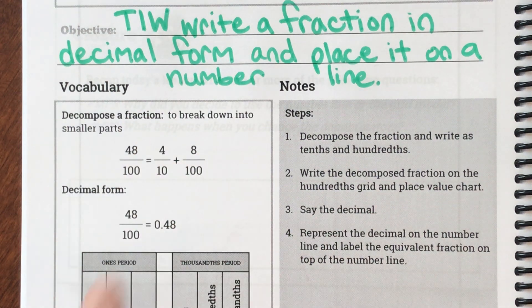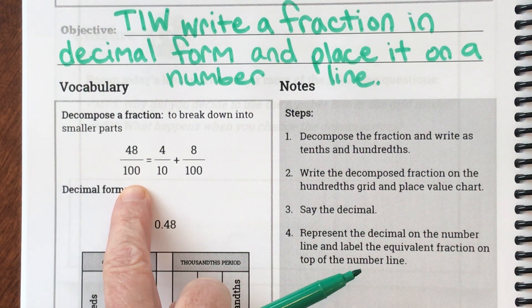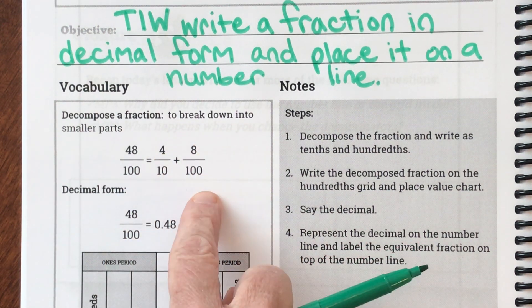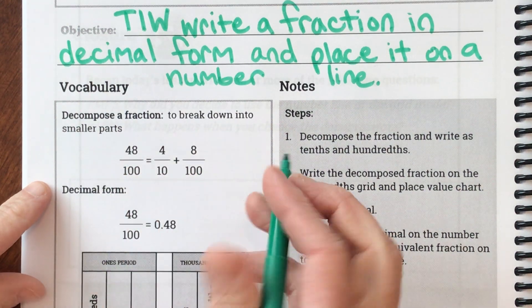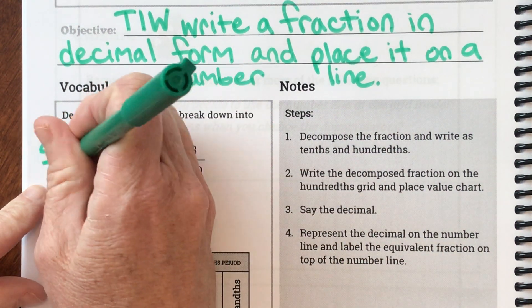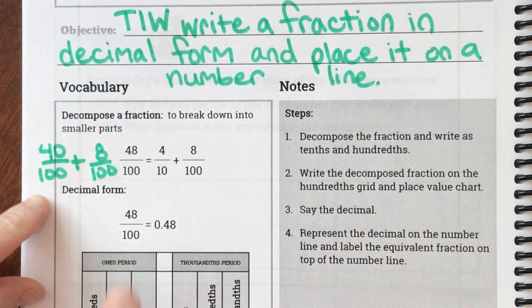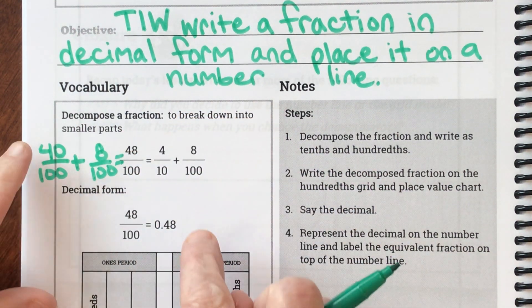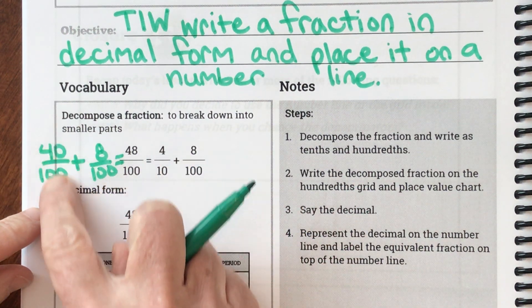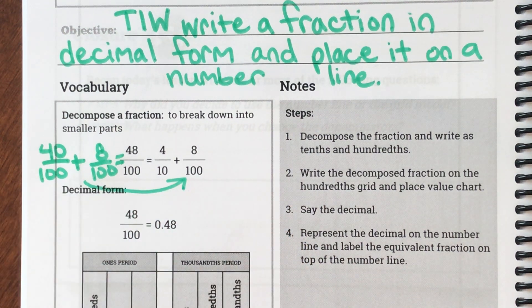Decompose means to break down into smaller parts. So 48 hundredths is the same as four tenths plus eight hundredths. The reason it's the same is because 48 hundredths is the same as 40 hundredths plus eight hundredths. So 40 hundredths plus eight hundredths gives us 48 hundredths, and we know that four tenths is the same as 40 hundredths — they kind of skipped to that step, but that's why they're equal.